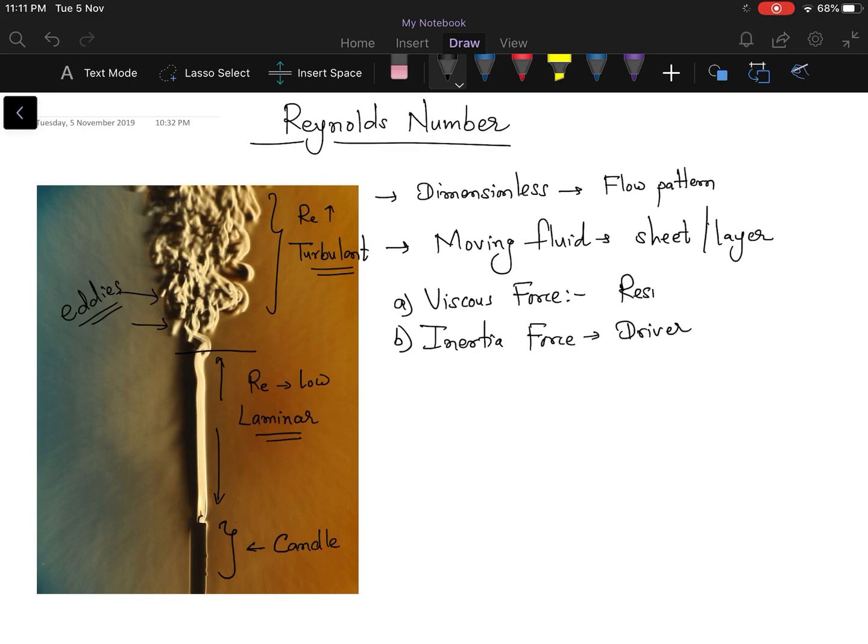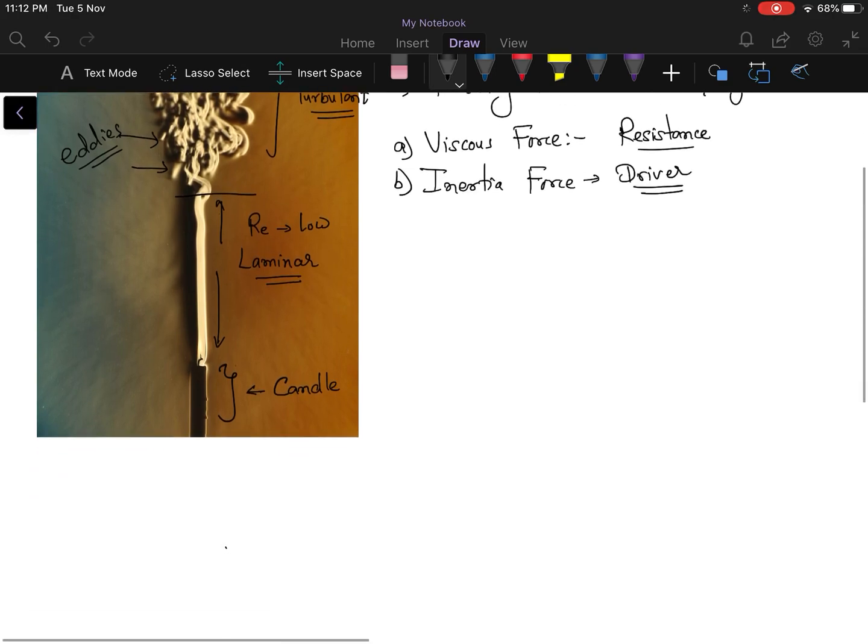and this is resistance. And let us see. Now we have understood what is viscous force, what is inertia force and what is Reynolds number. Reynolds number is a dimensionless quantity which helps in prediction of the flow pattern. Now let us do something numerical. Let us derive a formula for Reynolds number. And in simple terms, Reynolds number is defined as ratio of inertia force to viscous force.